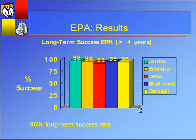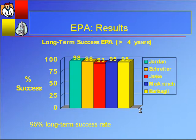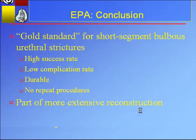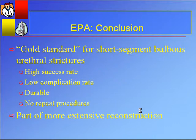The results from the largest series of EPA in the literature at the Devine Center: 198 patients, all with follow-up greater than four years, stricture length averaging about 1.8 centimeters but up to four centimeters in extenuating circumstances. 98% success — none of those required further instrumentation. Less than 2% rate of erectile dysfunction, 1% rate of infection and wound complications. Looking at five series from larger centers with long-term follow-up, it works out to a 96% long-term success rate — excellent for short-segment urethral strictures. Many consider excision and primary anastomosis the gold standard for the short-segment bulbous urethral stricture because of its high success rate, low complication rate, durability, and generally no repeat procedures are required for the rest of the patient's life.